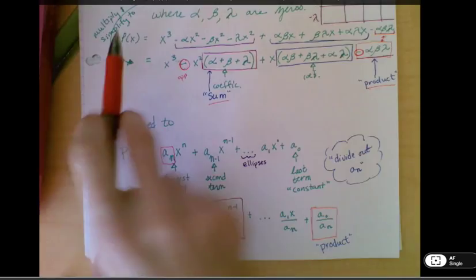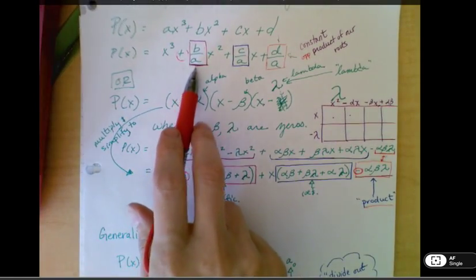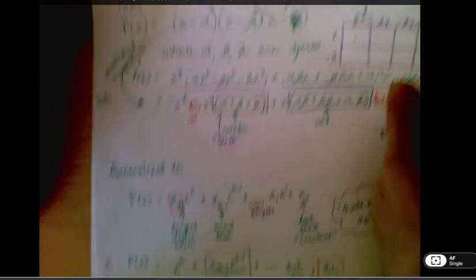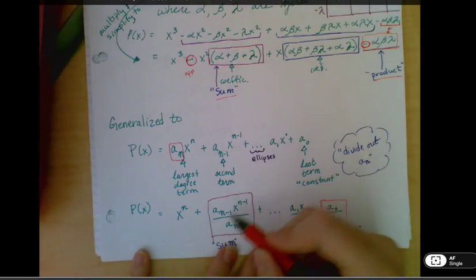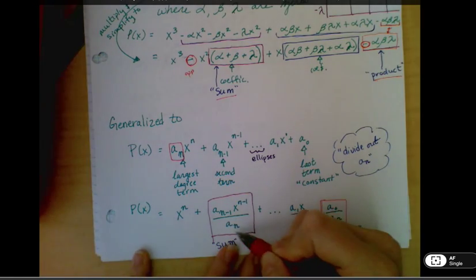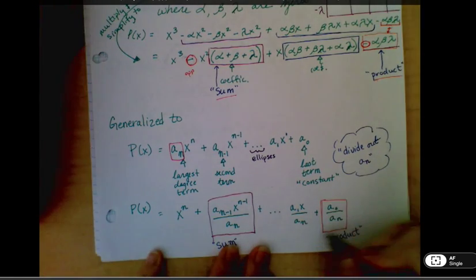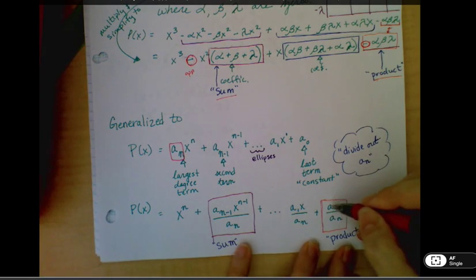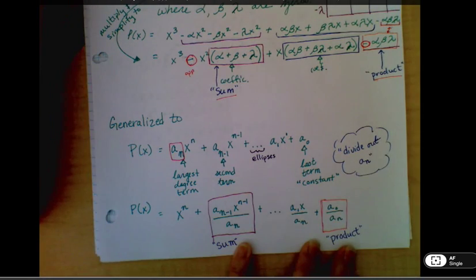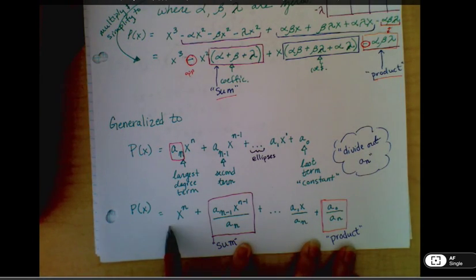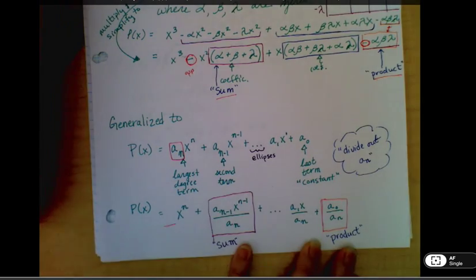Well, what happens if we divide out a over n? Then I'm left, just like we did up here, remember, divided out the a over n. We're left with a sub n minus 1 over a sub n, and we would do that all the way down until we had divided out every term, that coefficient, on the first term here.